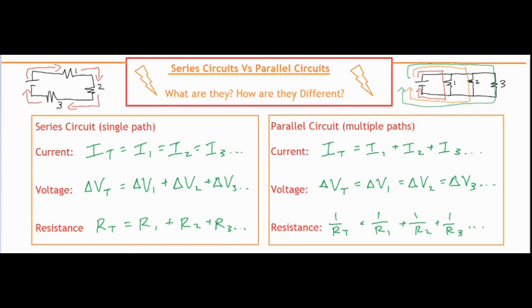The more resistors there are, the less overall resistance we have, as opposed to the series circuit where if you keep adding additional resistors, the electrons have to pass through more and more of them, and therefore contribute to making a greater total resistance. So I hope this side-by-side comparison was helpful in understanding the concepts of current, voltage, and resistance relating to a series and parallel circuit. Thank you for watching and listening.